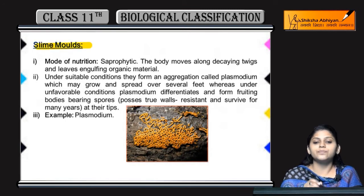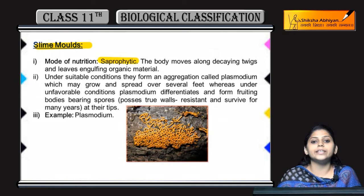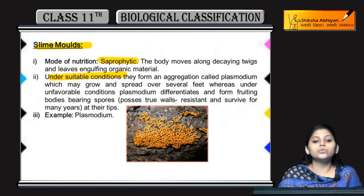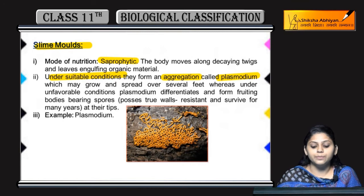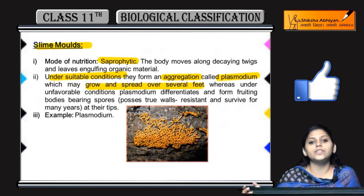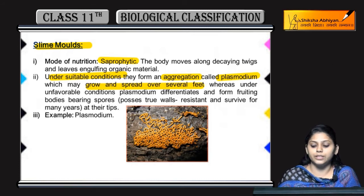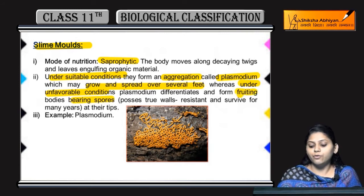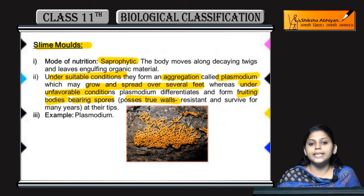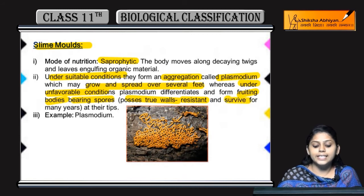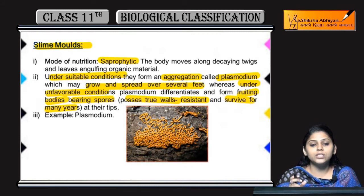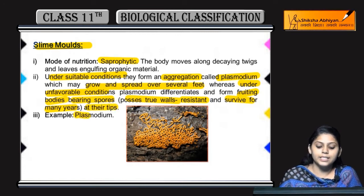Now coming to slime molds. Inka mode of nutrition saprophytic hai — saprophytic means yhe dead organic matter pe depend karte hai nutrition ke liye. Under suitable/favorable conditions yhe aggregates banate hai — us aggregate ko bolte hai plasmodium, jo grow karte hai and can spread into several feet, bahut hi lamba. Agar kuch unfavorable conditions hain toh yhe spore-bearing fruiting bodies banate hai. Woh jo spores hote hai, they possess true walls — rigid aur resistant hote hai, aur isliye yhe survive karte hai for many years. Yhe spores ake tips pe pare hote hai. Iska example plasmodium hai.